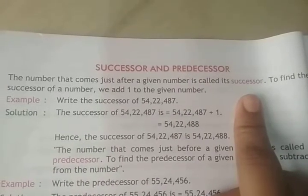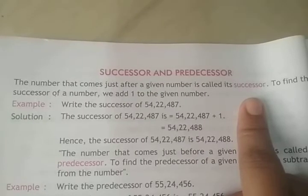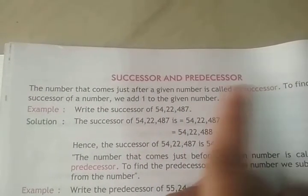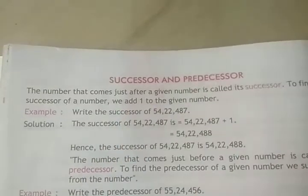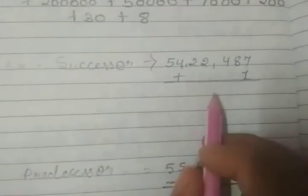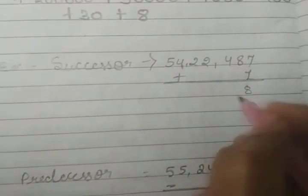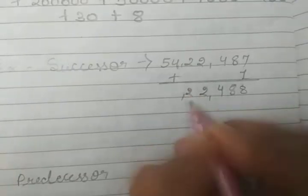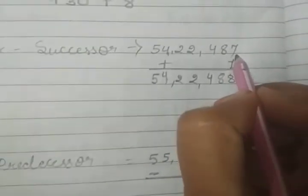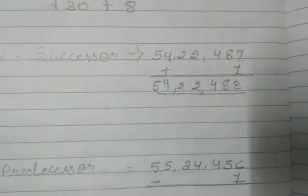For example, after 1 comes 2, after 10 comes 11, after 21 comes 22. To find the successor of a number, we add 1 to the given number. Hence, the successor of 54,22,487 is 54,22,488. This is our answer.